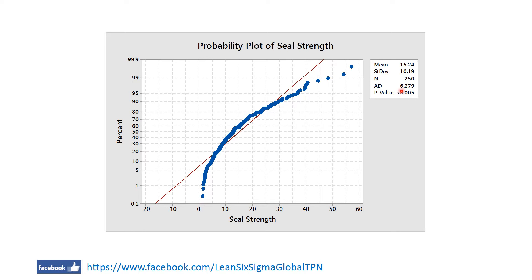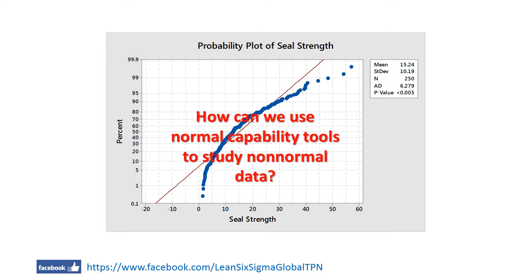Both the histogram and the p-value indicate that the data are not well modeled by the normal distribution. So how can we use normal capability tools to study a process that is clearly not from a normally distributed population?